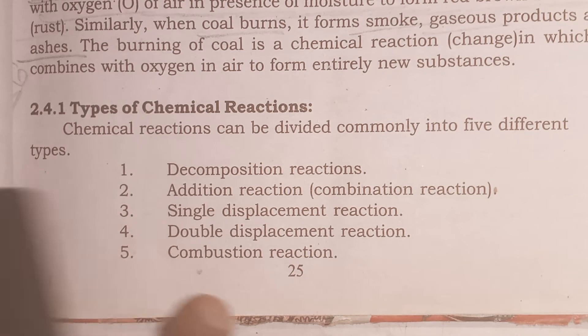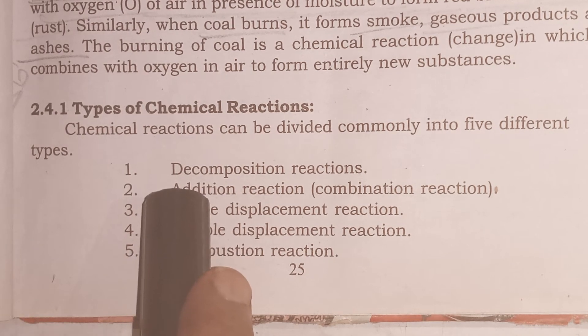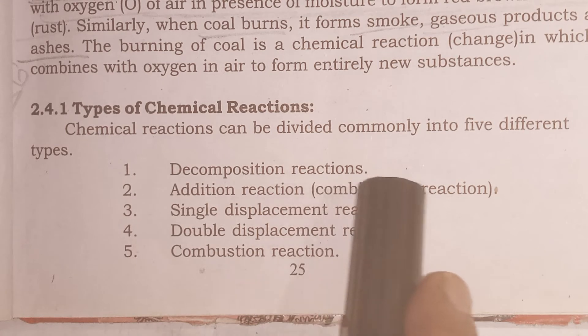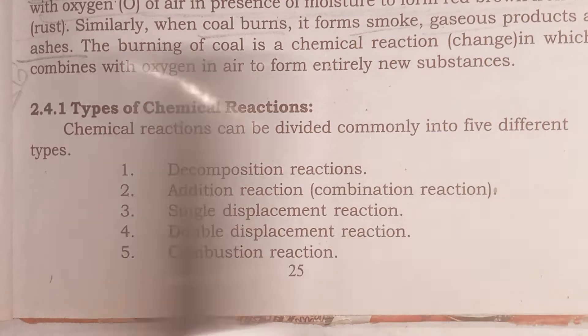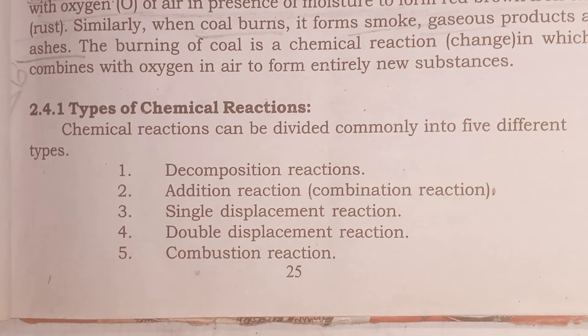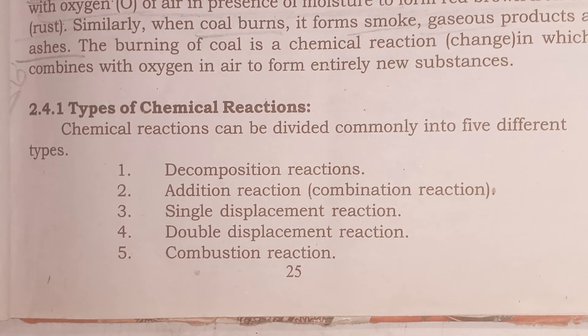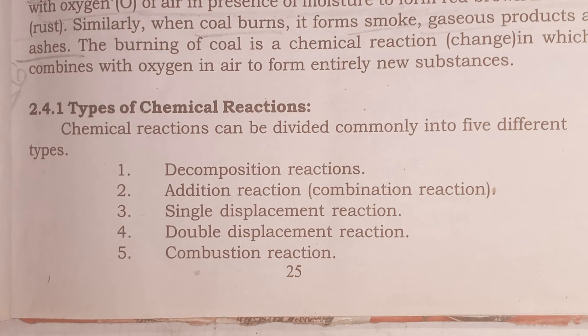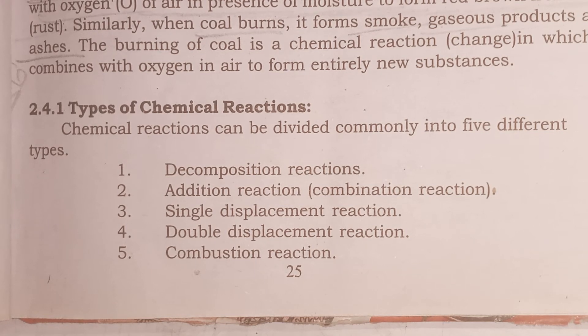Now we are discussing the Type of Chemical Reaction. Chemical Reactions can be divided into 5 different types. The first is Decomposition Reaction. The second is Addition Reaction, also called Combination Reaction.